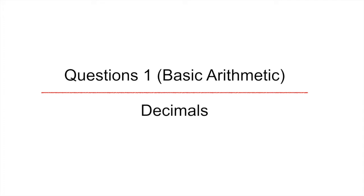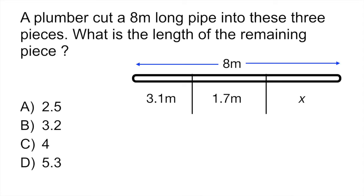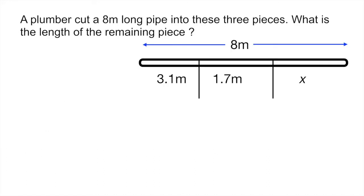Our first question today is a basic arithmetic question that looks at decimals and also involves a little bit of algebra. So algebra is really important for the GED. I'd say about 45 or 55% of questions are going to involve you doing some sort of algebra function. So make sure that you're really strong with your algebra. The problem says a plumber cut an 8m long pipe into these three pieces. What is the length of the remaining piece? So if you look at the question and the diagram, essentially the pipe is cut into three pieces, and they give you the length of two of those pieces, and they want you to find the remaining piece.